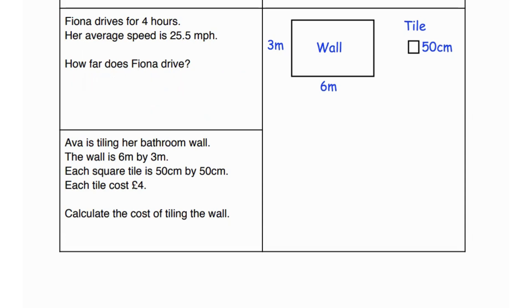Next question says Ava is tiling her bathroom wall. The wall is 6 meters by 3 meters. Each square tile is 50 centimeter by 50 centimeters. Each tile costs 4 pounds. Calculate the cost of tiling the wall. So if the tile is 50 by 50, let's find the area of the tile. That's going to be 50 times 50, and that's basically 2500 centimeters square.